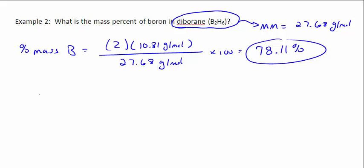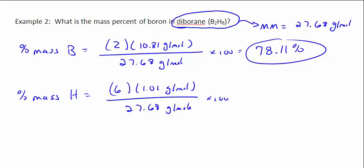Hey, just for fun, even though it doesn't say so, let's find the percent mass of hydrogen in this compound. So there are six hydrogens, each with 1.01 grams per mole divided by the 27.68 grams per mole times 100. If I do this, I get 6.06 divided by 27.68. I get 21.89 percent. Really, I get 21.9 because I'm lacking a significant figure there, but 21.89 percent.